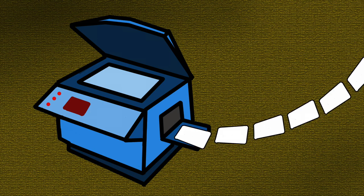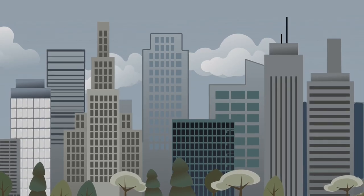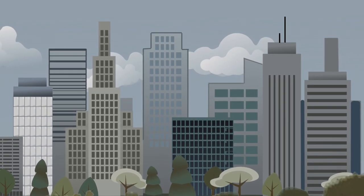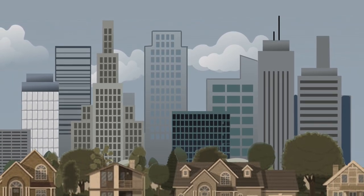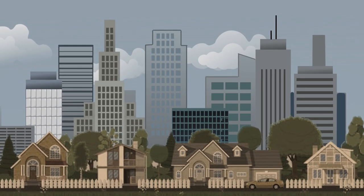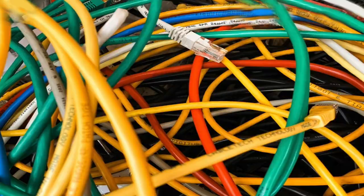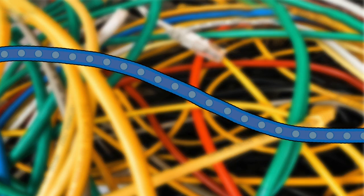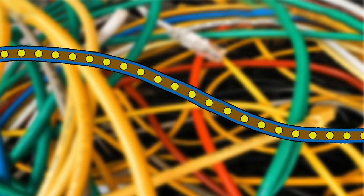But static electricity isn't a useful power source. Our cities, homes and devices are powered by electric current. Electric current is the flow of an electric charge through a circuit. In an electrical circuit, electrons move freely through a conductor, like a copper wire.